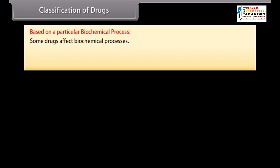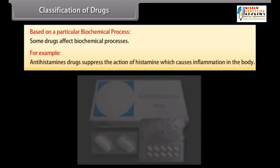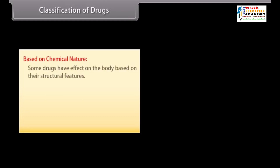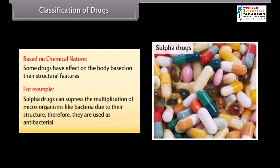Based on a particular biochemical process: some drugs affect biochemical processes. For example, antihistamine drugs suppress the action of histamine, which causes inflammation in the body. Based on chemical nature: some drugs have effect on the body based on their structural features. For example, sulphur drugs can suppress the multiplication of microorganisms like bacteria due to their structure; therefore they are used as antibacterials.